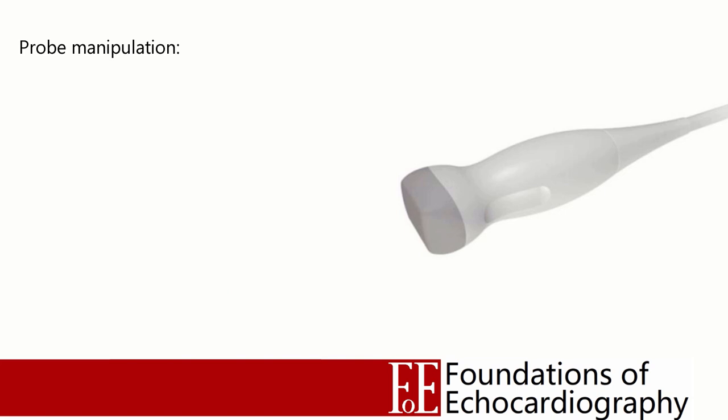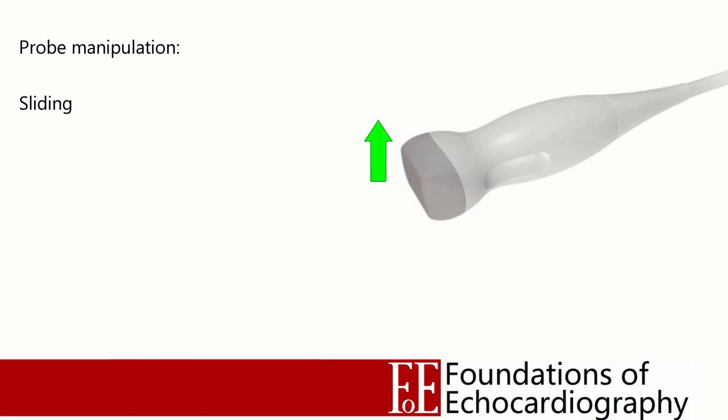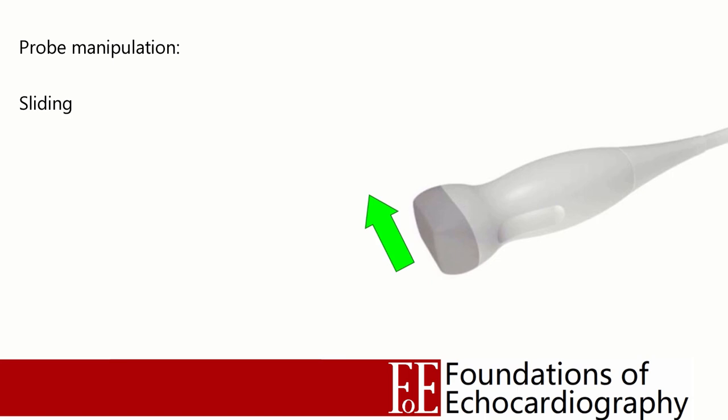When you're learning echocardiography your instructors will need to explain how to manipulate the probe to achieve better images. There's no universally accepted standardised way of describing probe movement, but in these videos I'm going to use the American Institute of Ultrasound Medicine's descriptors as published in the 1999 Journal of Ultrasound Medicine. First up we have sliding. Sliding is the only manipulation in which the probe's footprint moves where it's touching the patient, and we'll advise you to slide the probe superiorly, inferiorly, laterally or medially.